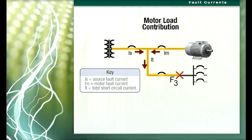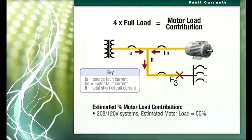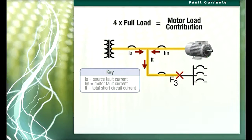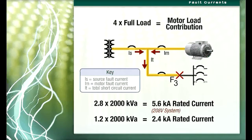Motor load contribution to a fault is estimated to be four times the full load running current of the motor. It is common practice to assume that 50% of the load is motor load on 208/120 volt systems and 100% for 240 and 480 volt systems. The percent contribution refers to the current rating of the transformer. Given a 2000 KVA transformer, rated current is approximately 2.8 × 2000 = 5.6 kA in a 208 volt system and 1.2 × 2000 = 2.4 kA in a 480 volt system.